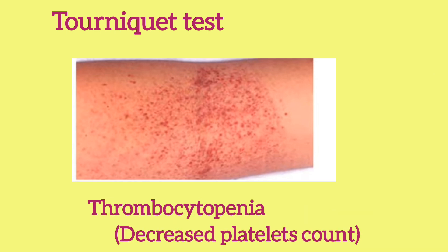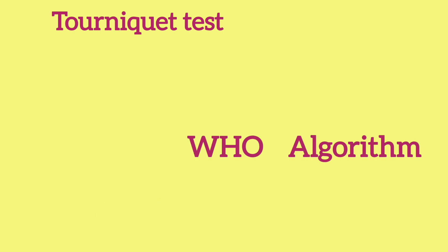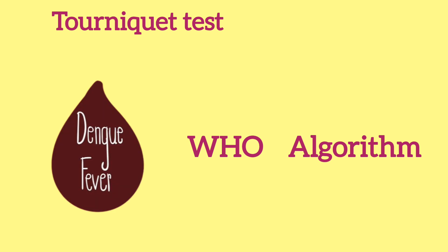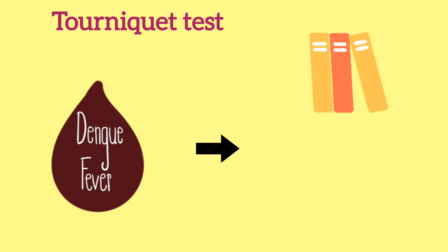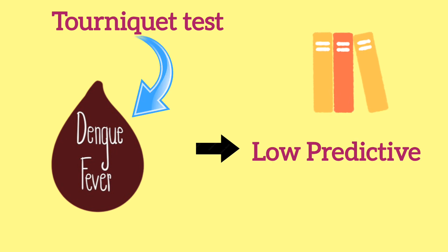Thrombocytopenia is the main cause for development of petechial lesions. The test was once part of the World Health Organization algorithm for diagnosis of dengue fever. However, it is no longer used in the latest WHO guidelines, as studies have shown that the tourniquet test has low predictive value for dengue fever.